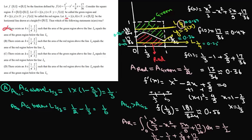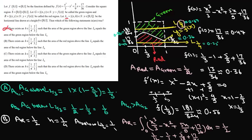Option B asks: does there exist an h between 1/4 and 2/3 such that the red area above L(h) equals the red area below L(h)? Taking h = 1/4: the red area below L(1/4) is simply 1/4, and the red area above L(1/4) is 1/2 - 1/4 = 1/4. So L(1/4) divides the red area into two equal parts. Option B is correct.